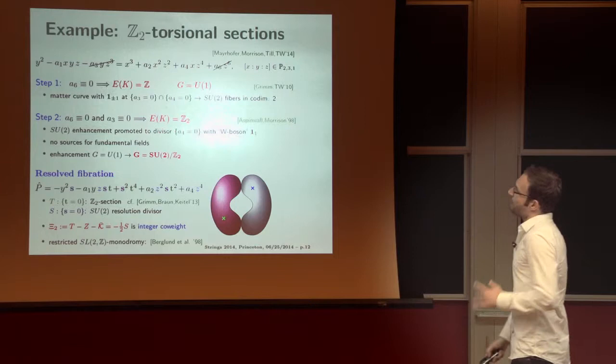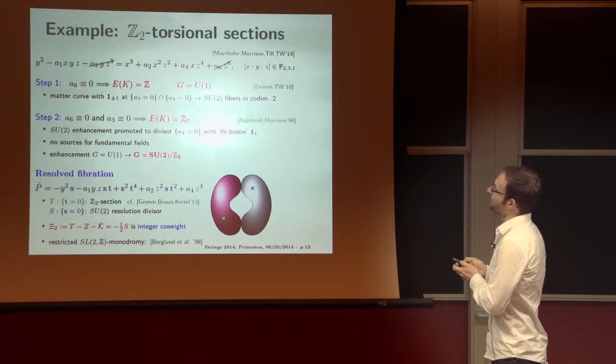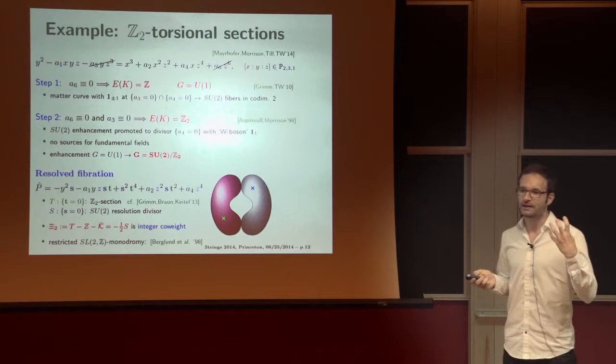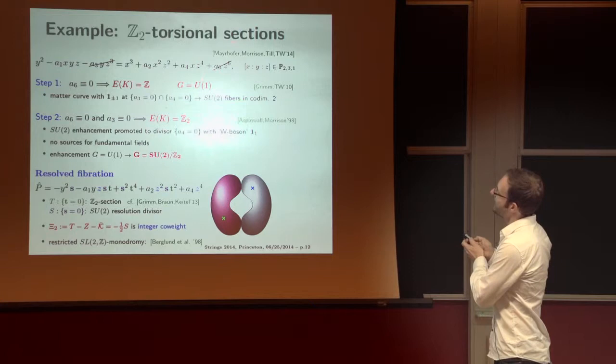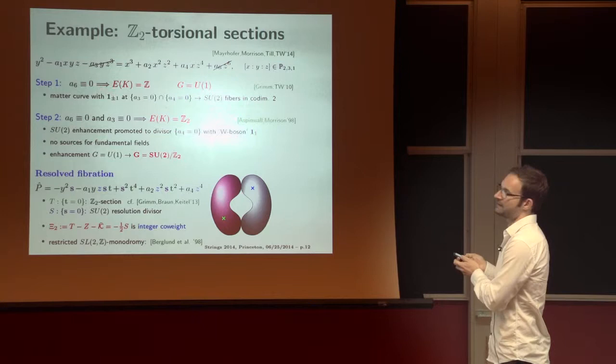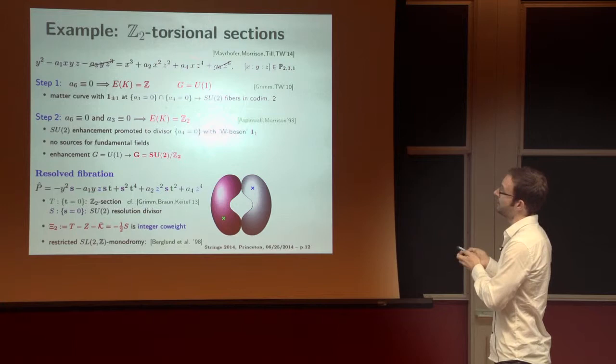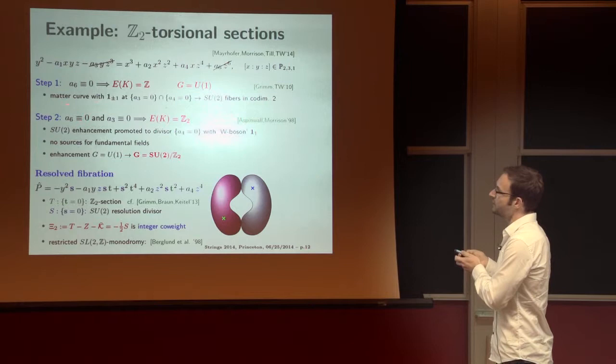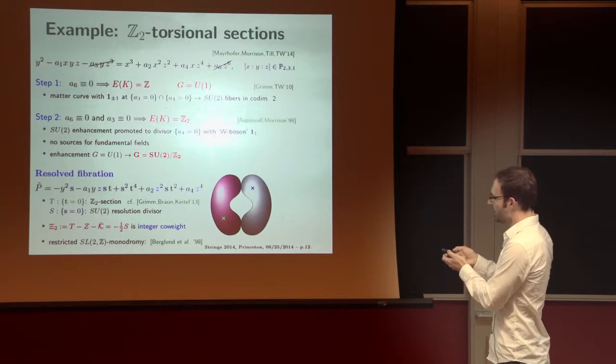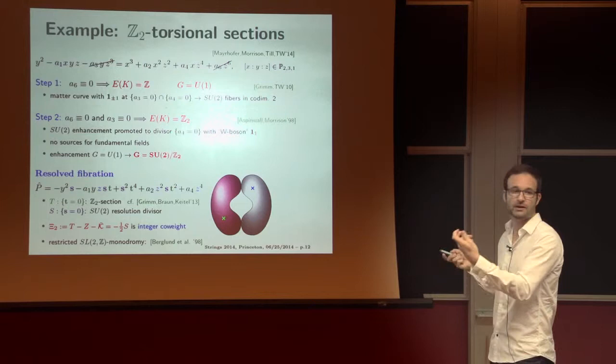So, for example, let's look at the simplest case of a Z_2 torsional fibration. Again, we start with the most general Weierstrass model in Tate form. And we can think about what's really going on by looking at this in a two-step process. So the first thing, again, we switch off this last term. We simply set a_6 equal to zero, as I already said. Now the Mordell-Weil group is Z. So we have one extra U(1) factor. We have one extra rational section, which is non-trivial. Indeed, it turns out that, in addition, one also has matter, charged matter, as Dennis also discussed. And this charged matter, which is charged under this U(1), is localized, as it turns out, at a curve in the base, a_3 and a_4 equal to zero. So we have SU(2) fibers in co-dimension two.